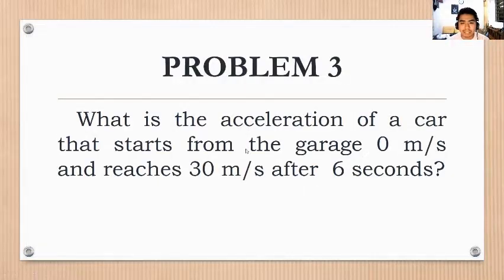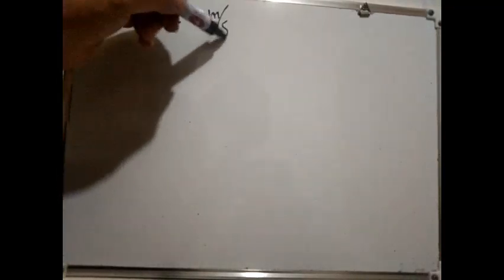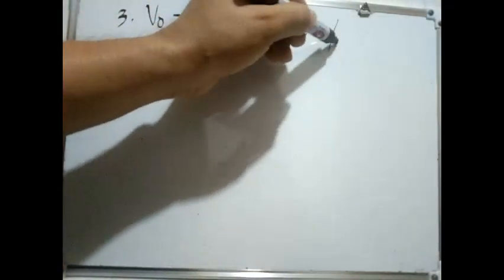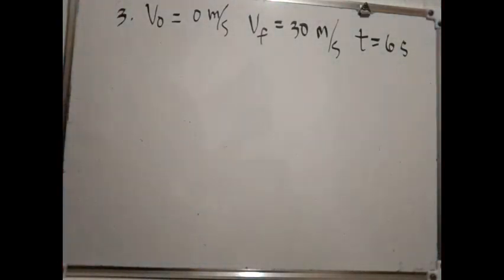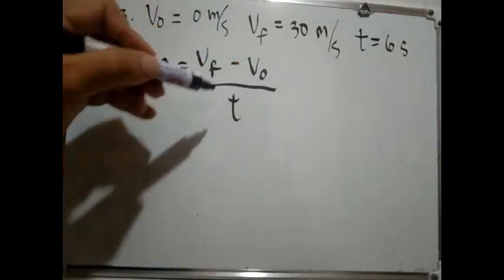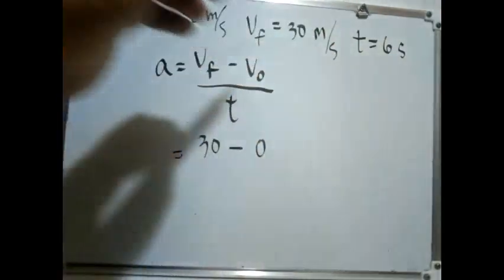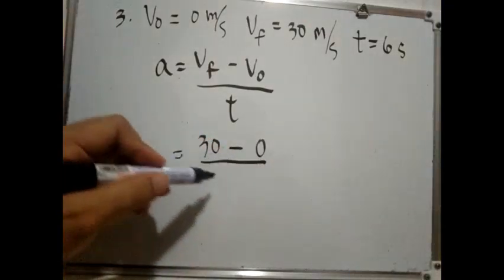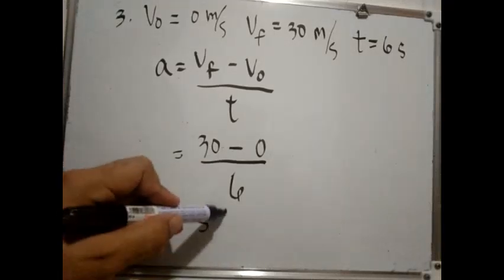Problem 3: What is the acceleration of a car that starts from the garage at 0 meters per second and reaches 30 meters per second after 6 seconds? Given: v₀ = 0 m/s, v_f = 30 m/s, t = 6 s. Acceleration = (v_f − v₀) / t = (30 − 0) / 6 = 5 meters per second squared.